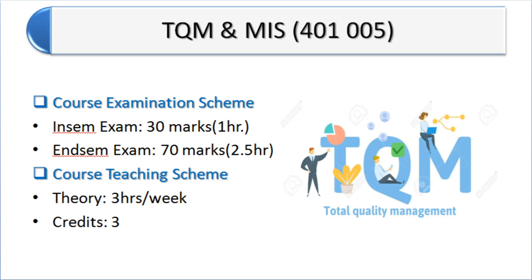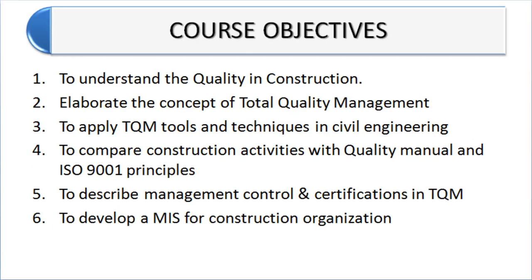The course teaching scheme is three hours per week and this course has three credits. There are six course objectives. First is to understand the quality in the construction, second to elaborate the concept of total quality management, third to apply TQM tools and techniques in civil engineering.